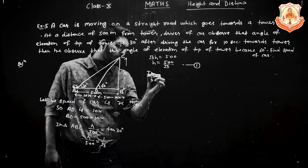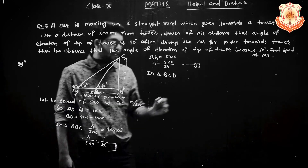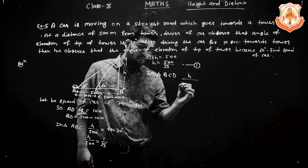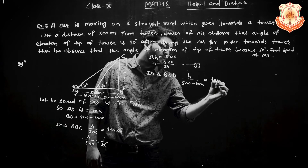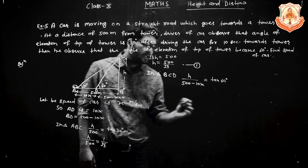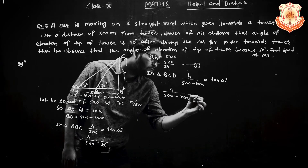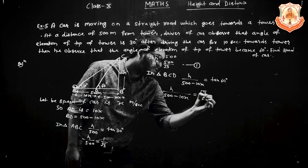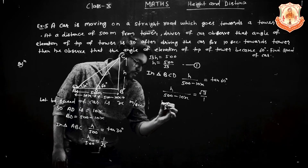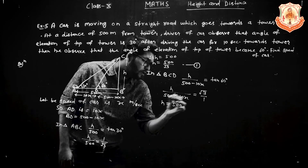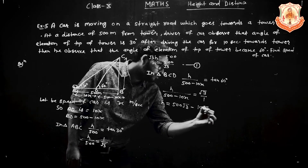In triangle BCD: H upon (500 minus 10X) equals tan 60 degrees, which equals root 3. After cross multiplication, H equals root 3 into (500 minus 10X), which equals 500 root 3 minus 10 root 3 X.